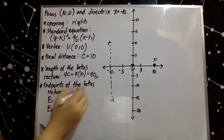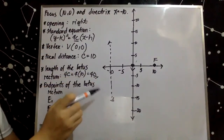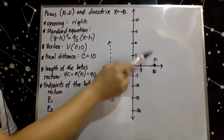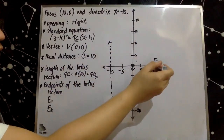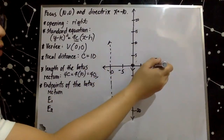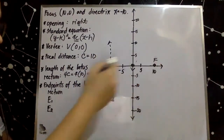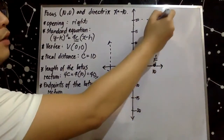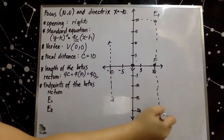We can easily determine the endpoints of the latus rectum. The latus rectum is a line segment connecting two points of the parabola that passes through the focus, and it is parallel to the directrix. Since the length of the latus rectum is 40 units, I will count 20 units above the focus to locate endpoint one, and 20 units below the focus to locate endpoint two.